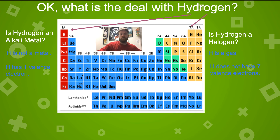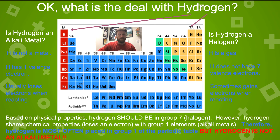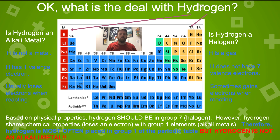So maybe it makes more sense to put hydrogen above group 1. Alkali metals like to lose that one electron, and most of the time that's what hydrogen wants to do too — but sometimes it will gain electrons when reacting. Based on its physical properties, hydrogen should be in group 17 with the halogens. However, hydrogen has the chemical properties of a group 1 metal — when it reacts, it tends to lose an electron. Therefore, you will see hydrogen above group 1 most of the time. But remember, hydrogen is not an alkali metal — the alkali metals start with lithium.